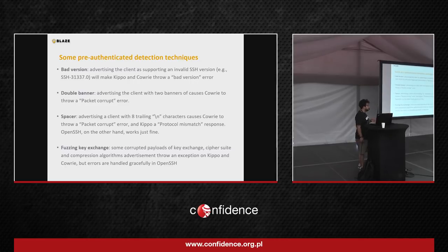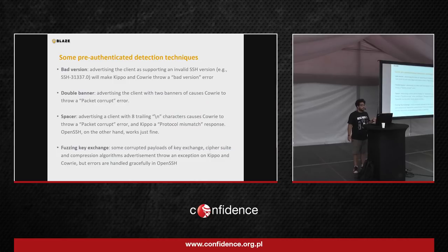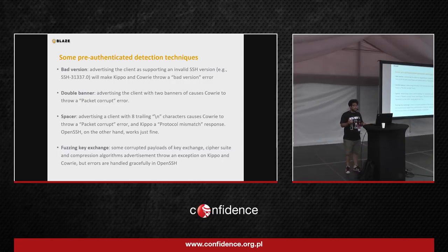First, there's the bad version technique. When an SSH client advertises itself to the server, it says 'SSH-2.0-' plus the client banner version. In Cowrie and Kippo, whenever it sees an SSH version that's not 1.99 or 2.0 — the only standardized SSH versions — Kippo throws a 'bad version' error. Whereas OpenSSH will throw something like 'protocol mismatch' or 'protocol major differences.' So it throws a very different error that tells you this is not OpenSSH as it claims to be.